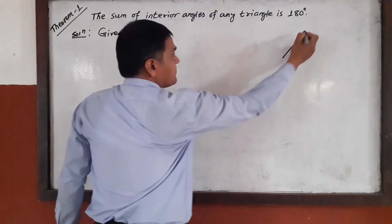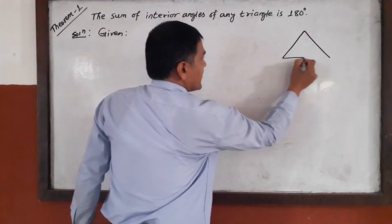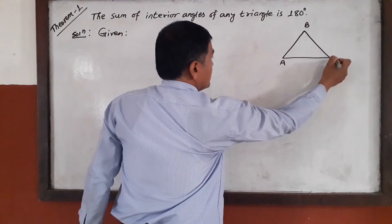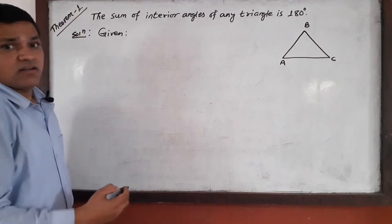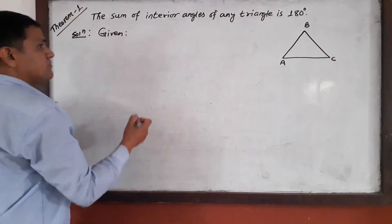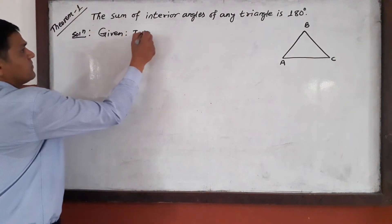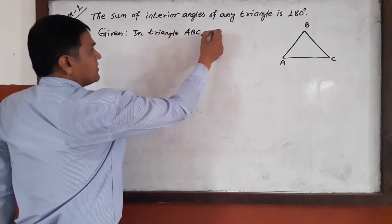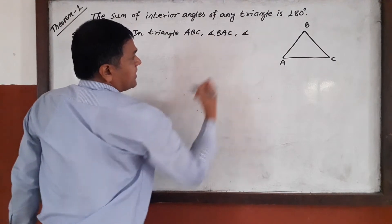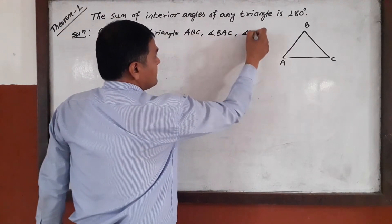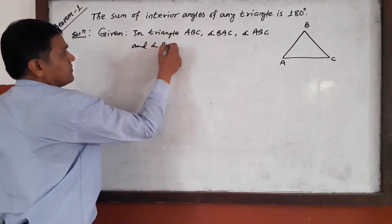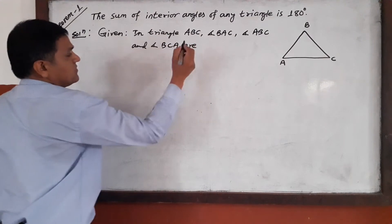You can see the figure — triangle ABC is made. It has three angles: angle A, angle B, and angle C. In triangle ABC, angle BAC, angle ABC, and angle BCA are interior angles.